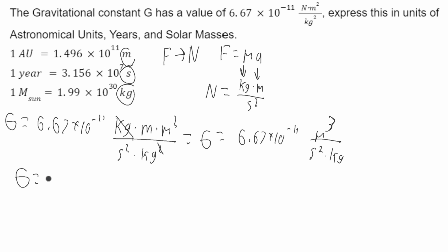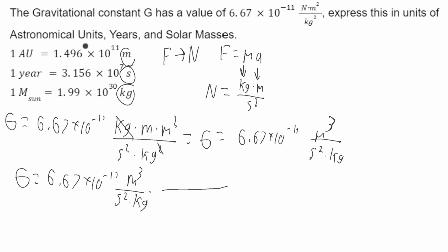Now I can begin doing my conversions since I have only meters, kilograms, and seconds. I'll write this on the line below to do my unit conversions. Starting with converting meters into astronomical units — I have meters cubed on the top, so I need the meters to cancel. I'll place 1.496 times 10 to the 11 meters on the bottom, cubed, and astronomical units cubed on the top.